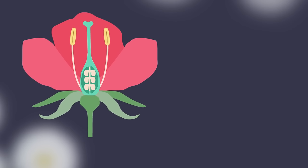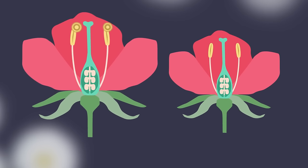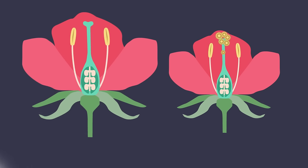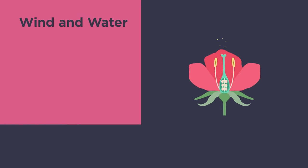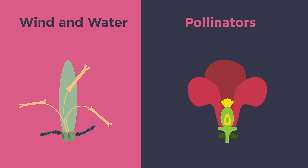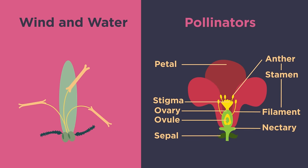So how does pollination work? Pollination is the transfer of pollen from the male anther of one flower to the female stigma of another. Flowers can be pollinated in different ways — by wind and water, or by pollinators such as insects, birds, and other animals. Flowers pollinated by pollinators are structurally different from those pollinated by wind or water.